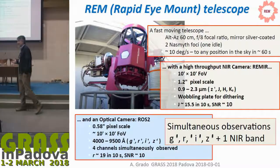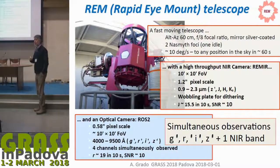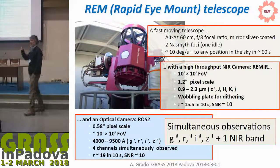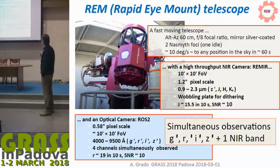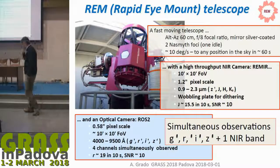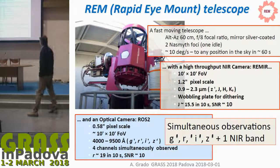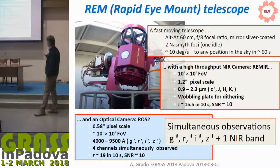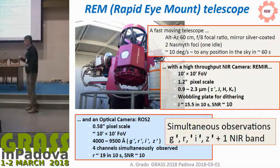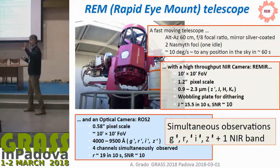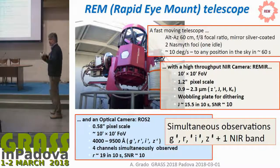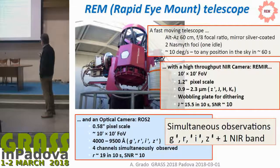We also have the REM telescope in La Silla — a robotic, rapid-response telescope that can move very fast to a target. It has a 10 by 10 arcminute field of view but can use several filters simultaneously, so you image the field at the same time in multiple filters, which is very useful.